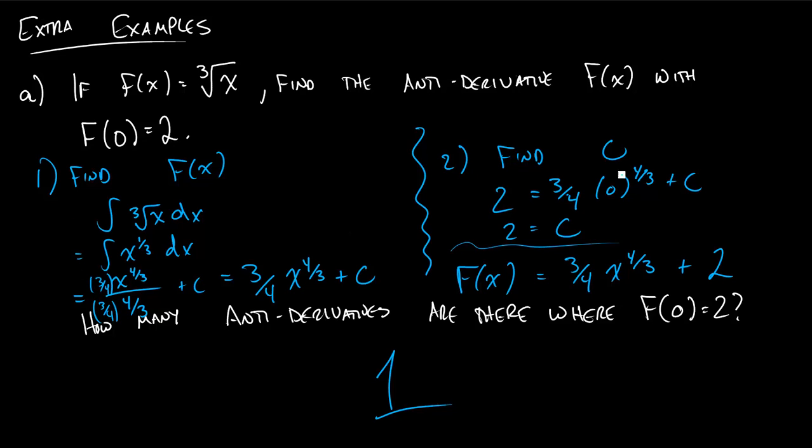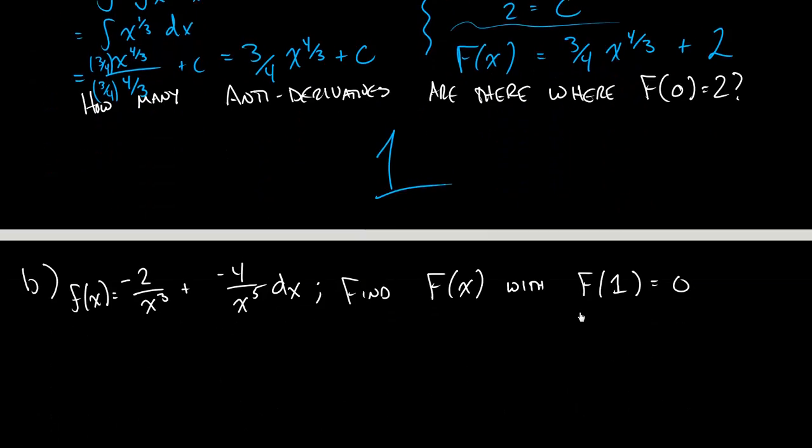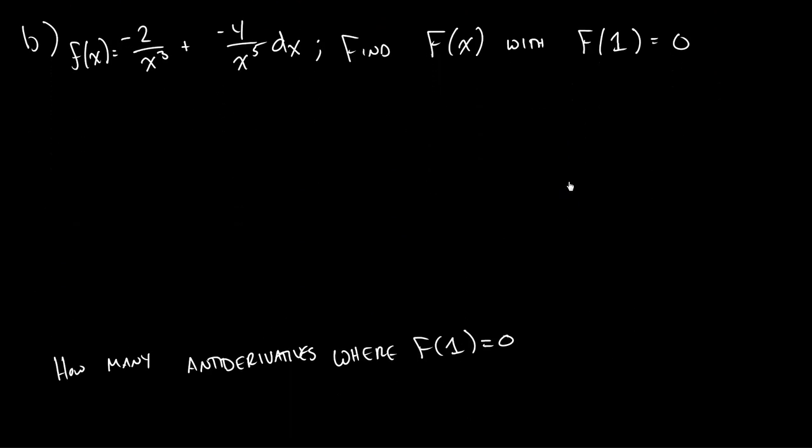So you find your F of x, you find your c, and that is your single example of a function where if you take the derivative, you'll get this out. I encourage you to do that if you don't believe me. Here is a final example for us to cover. Our little f of x is equal to this, and we want to find our antiderivative where if we plug in 1 into x, we get 0.